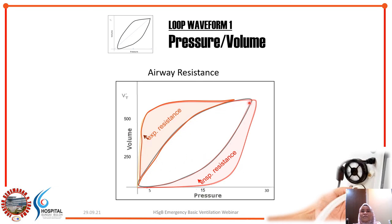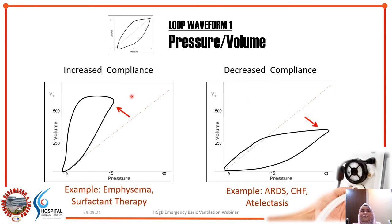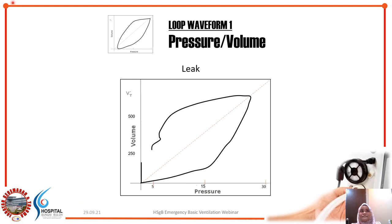Visually, a normal loop that becomes wider indicates increased airway resistance. The loop can also show changes in compliance: it shifts upward to the left for increased compliance, or shifts down to the right for decreased compliance, such as in ARDS. Additionally, if the expiratory portion of the loop doesn't return to baseline, this indicates a leak.